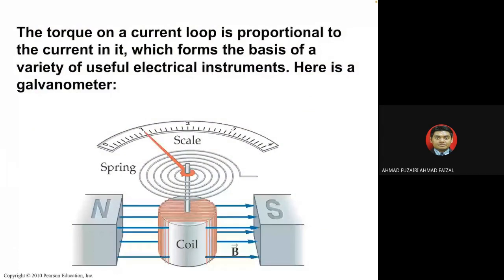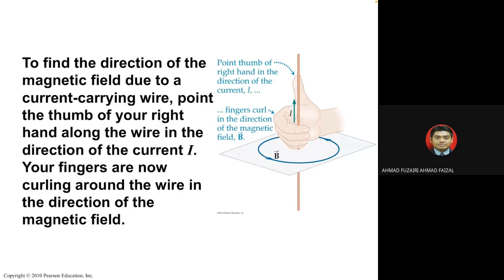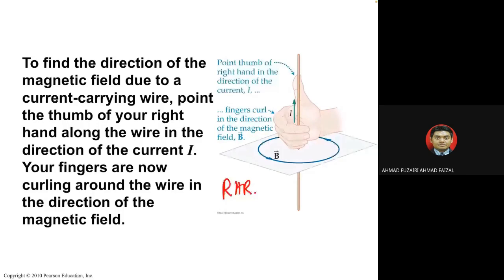Ampere's Law tells us how to find the direction of the magnetic field due to a current-carrying wire. We use the right-hand rule, but this time the thumb points in the direction of current, and the rest of the fingers show the magnetic field direction — curling around the wire.